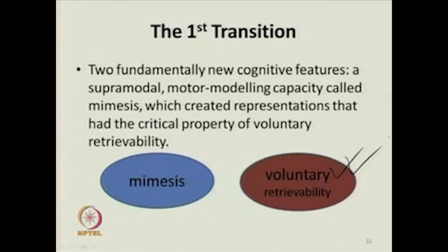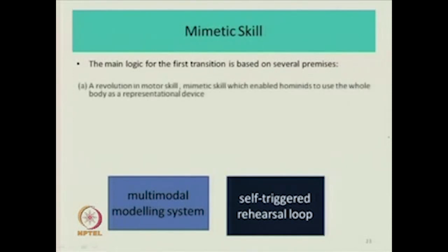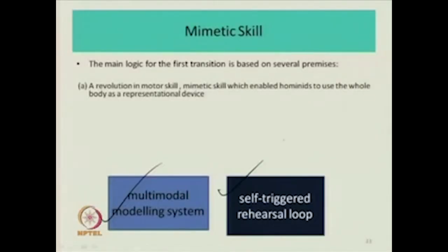So the first transition involves two things: mimesis and voluntary retrievability. Voluntary retrievability is something we saw that apes do not have. We developed something called auto-cueing — cueing without the need for any environmental cue, self-triggered. According to Donald, two fundamentally new cognitive features develop: a supramodal motor modeling capacity called mimesis, which created representations that had the critical property of voluntary retrievability. Hominids were able to use the whole body as a representational device — to mime or imitate things using the entire body. Remember, we do not have language at that stage. There was a self-triggered rehearsal loop — an auto-cueing system — meaning you can trigger your memories at will.